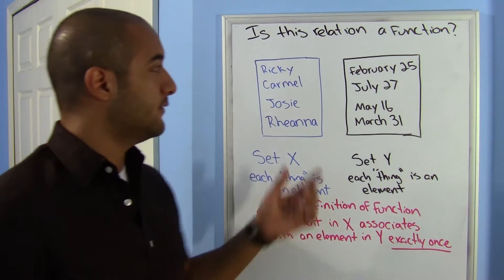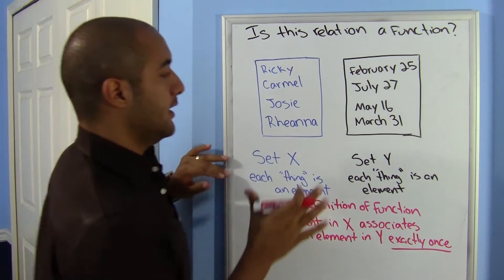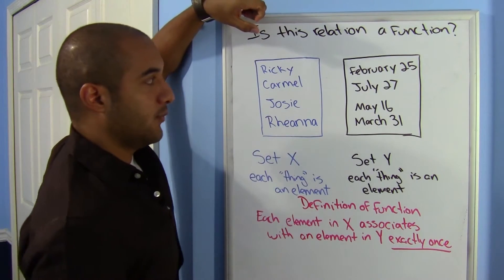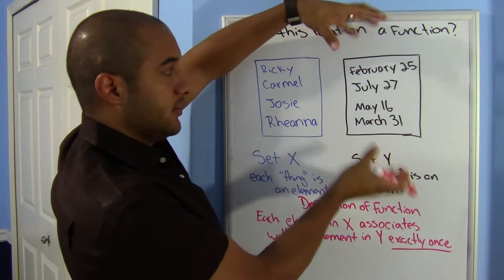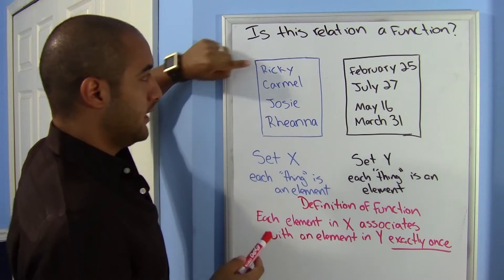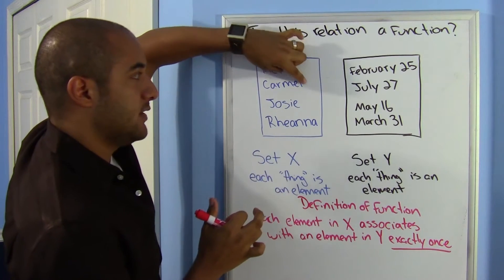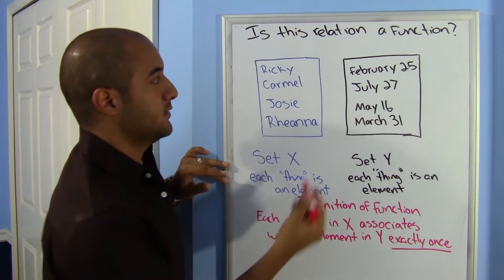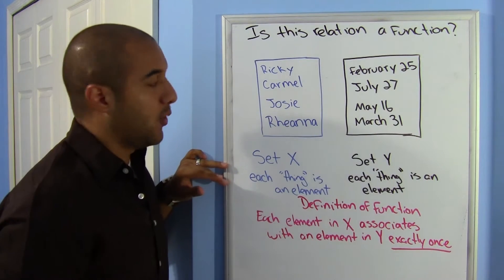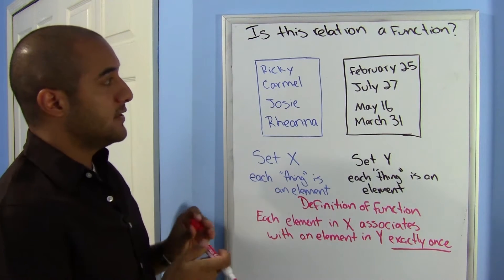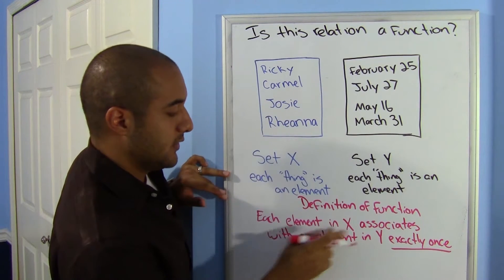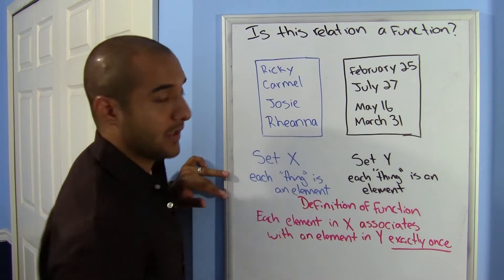Here I have an example of a relation. I have a set X — a group of things — and I'm going to show a relationship with set Y, another group of things. In this case I'm going to do people with birthdays. In set X, each individual thing is called an element. I have four elements here, and likewise four elements in Y. For this to be a relation, each element in X associates with an element in Y exactly once.